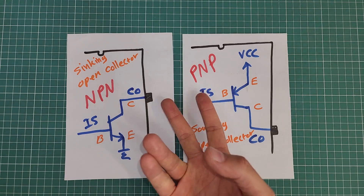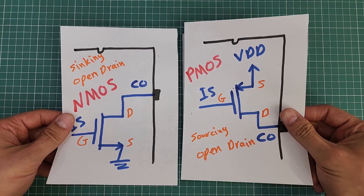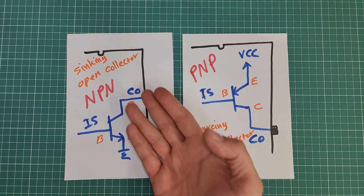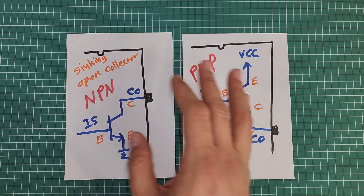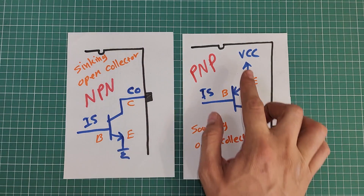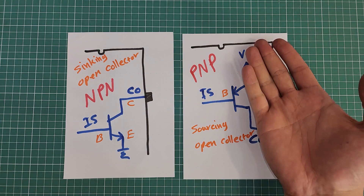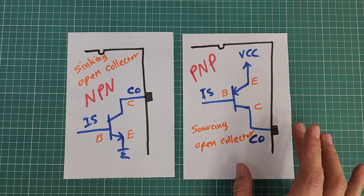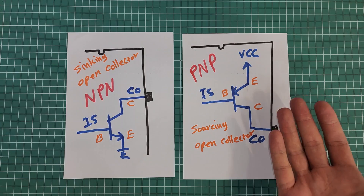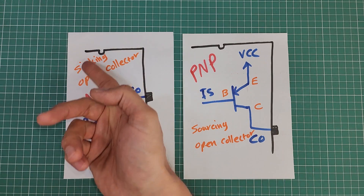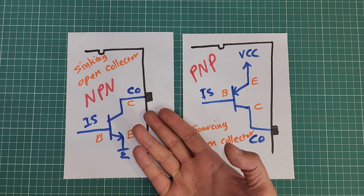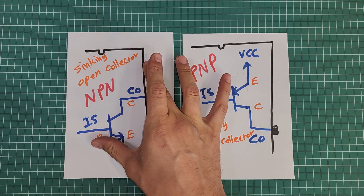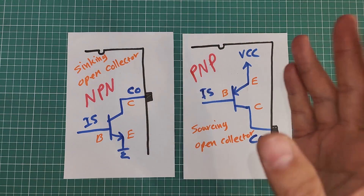There are two types of open collector outputs and also two types of open drain outputs. Open collector outputs can be made using NPN transistors or PNP transistors, though NPN open collectors are more common. Looking at these diagrams, it is clear that PNP open collectors connect the output to VCC voltage when active and leave the output in the air when inactive. We already considered the NPN type open collector which connects output to ground when active and leaves output in the air when inactive. We will concentrate on NPN open collector in the rest of this video because PNP types are rarely used.